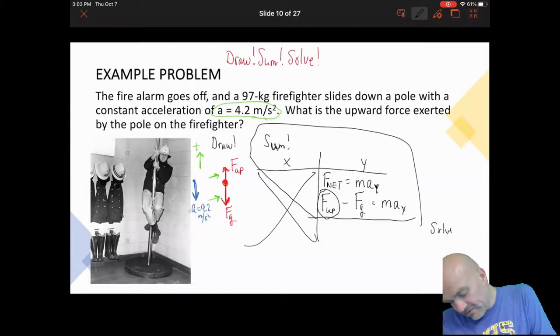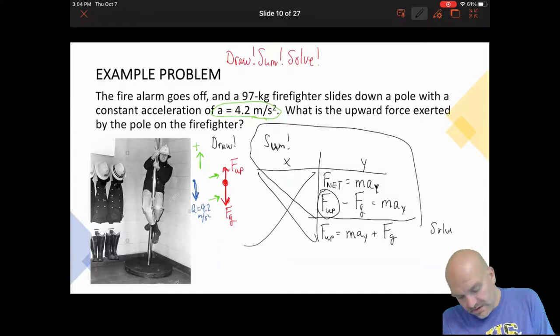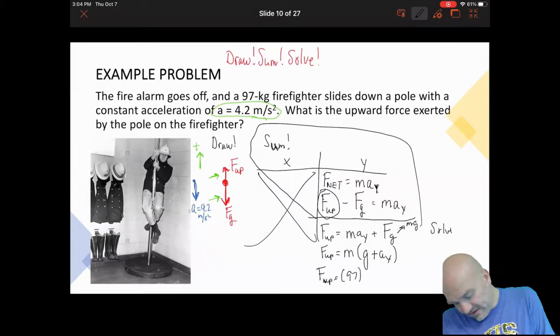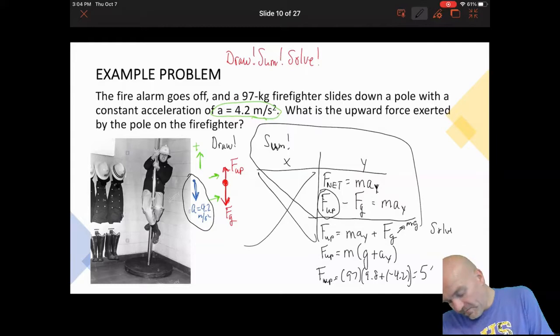And now I'm going to do my solve step by just simply now solving for F_up. So F_up equals ma_y minus, I'm sorry, yes, no, plus Fg. Almost did my algebra wrong there. And so F_up is going to be m times g plus a_y. Now remember, Fg is mg, so I factor out an m and say F_up equals 97 times 9.8 plus negative 4.2, negative because our acceleration is down the pole. And I'm going to find that that upward force is 540 newtons.